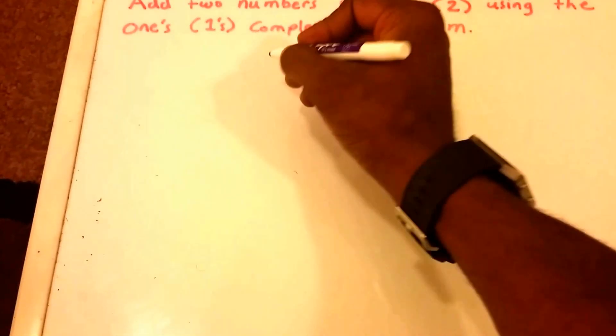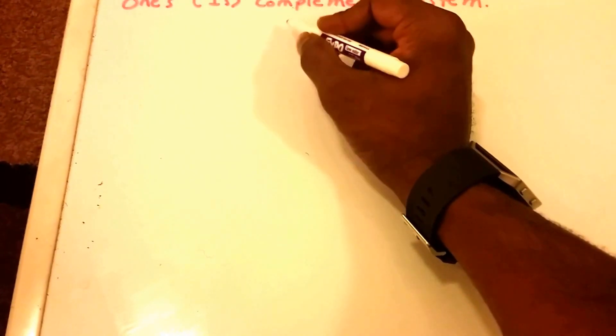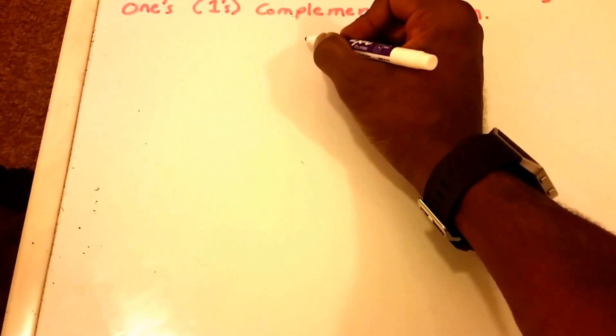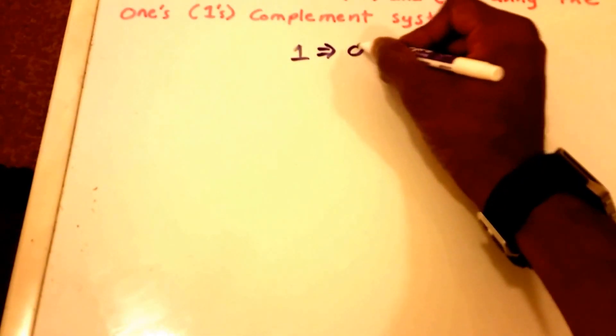So let's get started. First thing we need to do is convert our numbers into the one's complement system. To do that we have our number one which of course in the one's complement is 0001.